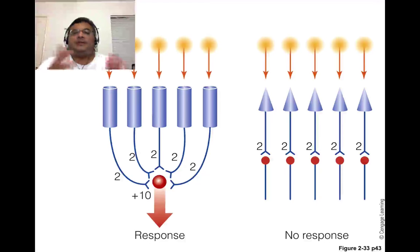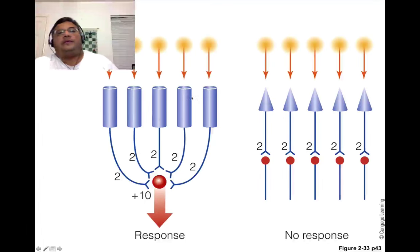150 rods cannot possibly give you the same level of detail, visual acuity, as one cone connected to one ganglion cell. So here's that principle illustrated here in this slide. We have 1, 2, 3, 4, 5 rods all communicating with one ganglion cell, all synapsing with one ganglion cell.